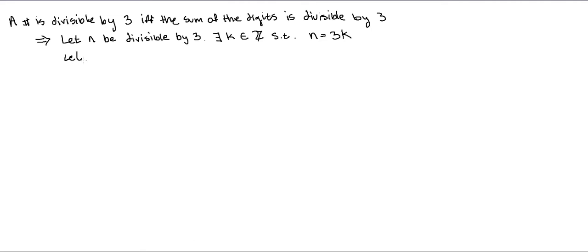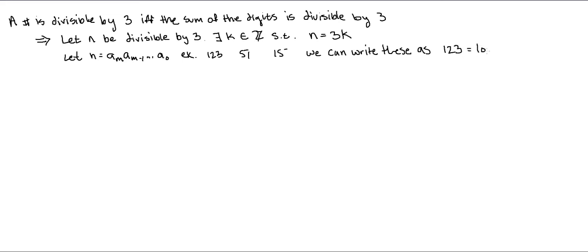Now we're going to let n be represented by its digits: a_m, a_{m-1}, a_{m-2}, all the way down to a_0. These a_m's represent each digit in our number. For example, if we had 123, then a_m is 1, a_{m-1} is 2, and a_0 is 3. We can represent these mathematically: the 1 in 123 is 100, the 2 is 20, the 3 is 3. So 123 = 100 + 20 + 3, 51 = 50 + 1, and 15 = 10 + 5.